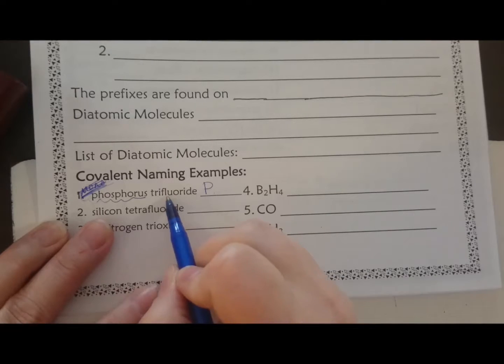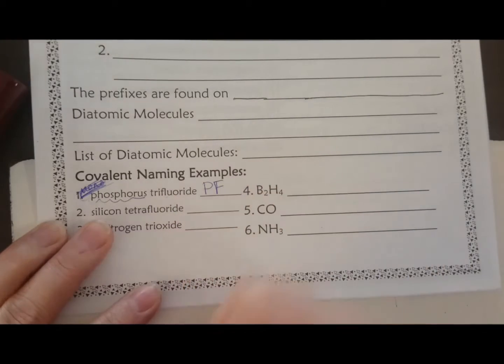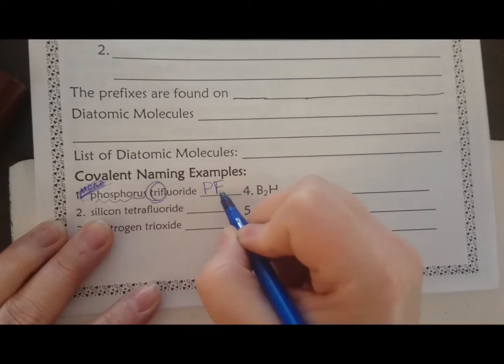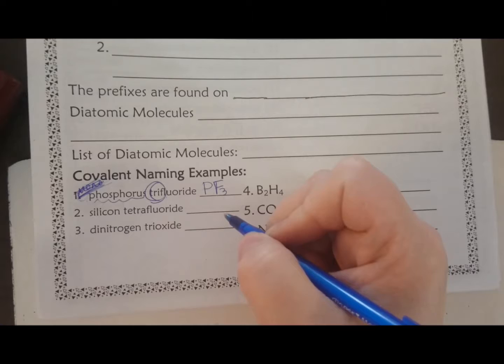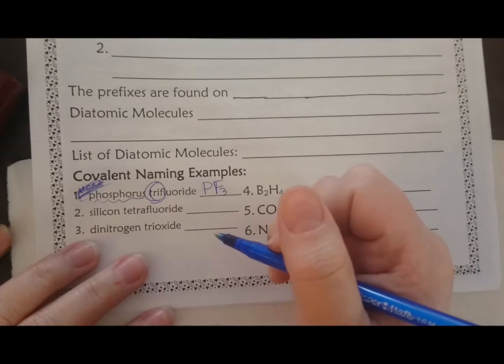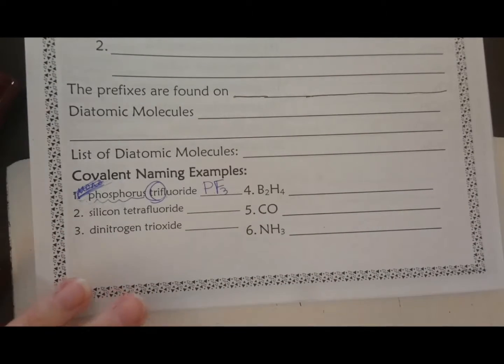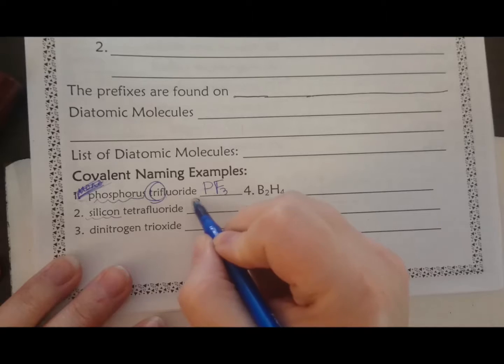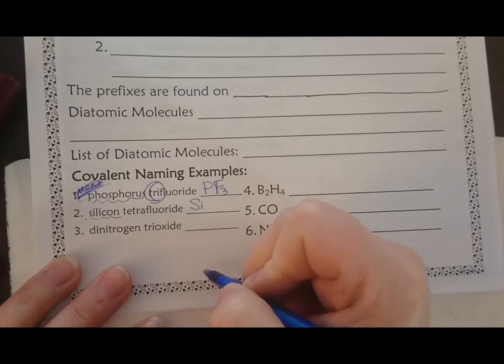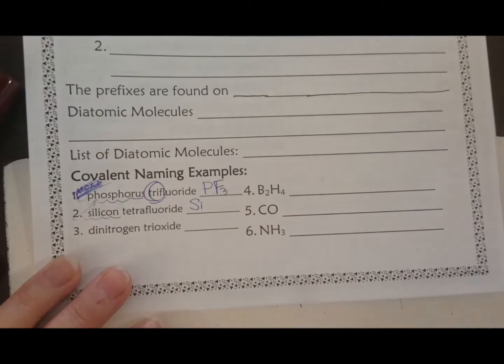Now on the second one I have trifluoride. So fluorine is fluoride, and tri means three. If you don't know the prefixes, look them up on your periodic table, but most of them are pretty self-explanatory - they're similar to the polygons in geometry. Silicon is Si, and again there's no prefix so I know that's one. Tetrafluoride - fluoride is F, tetra means four.